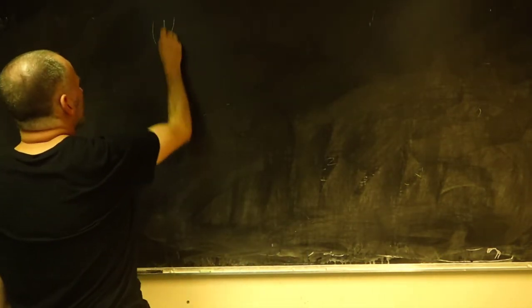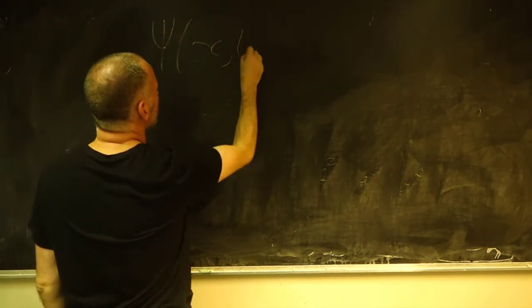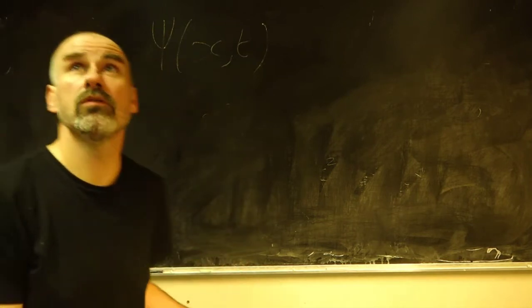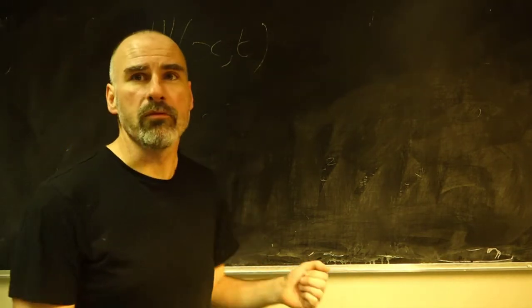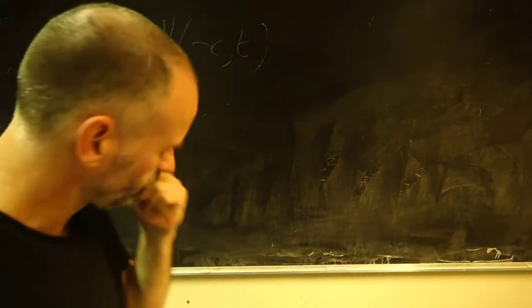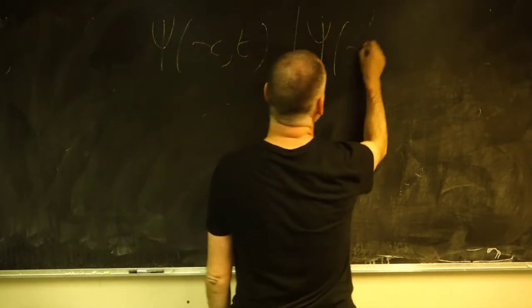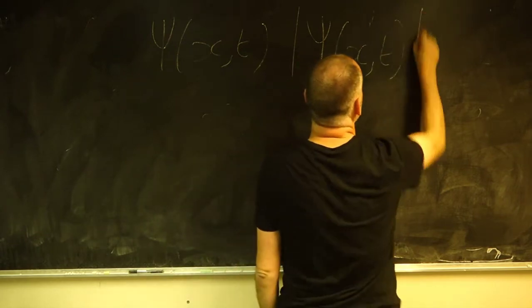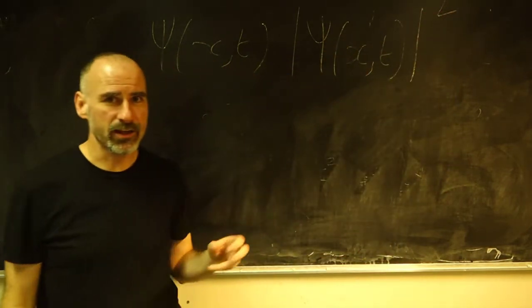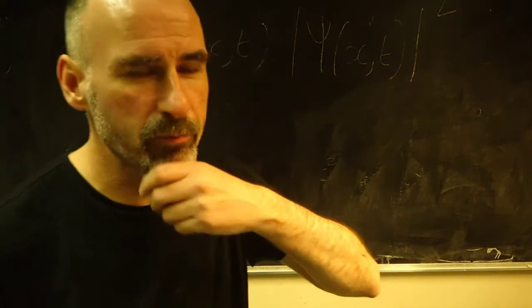So we have a wave function that represents the state of our quantum system. From that, we can get this quantity, which is our probability density, in turn from which we can get probabilities.